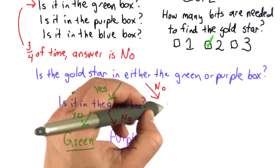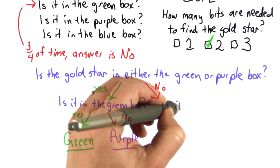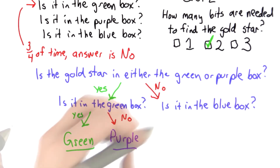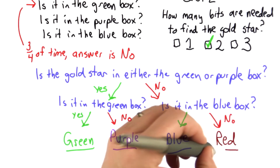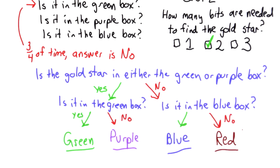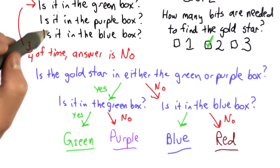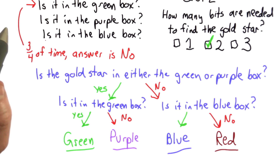And that's the same if the answer was no to the first question — we can ask: is it in the blue box? If the answer is yes, we know it's in the blue box. If the answer is no, we know it's in the red box. So now we can cover all four possible boxes. We didn't need three questions like we did when we asked 'is it in the green box? Is it in the purple box? Is it in the blue box?' Here we only needed two.